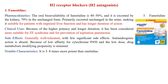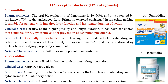Famotidine has an oral bioavailability of 40–50% and is excreted by the kidney, 70% in unchanged form, making it suitable for patients with impaired liver function. It has a longer duration of action, and because of its higher potency and longer duration, it is considered more suitable for Zollinger-Ellison syndrome and prevention of aspiration pneumonia. Anti-androgenic action is absent due to low affinity for cytochrome P450, and drug metabolism-modifying propensity is minimal. It is 5–8 times more potent than ranitidine. Roxatidine is metabolized in the liver with minimal drug interactions; used in GERD and peptic ulcers. It has no anti-androgenic or cytochrome P450 inhibitory actions, and is similar to ranitidine but twice as potent and longer acting.